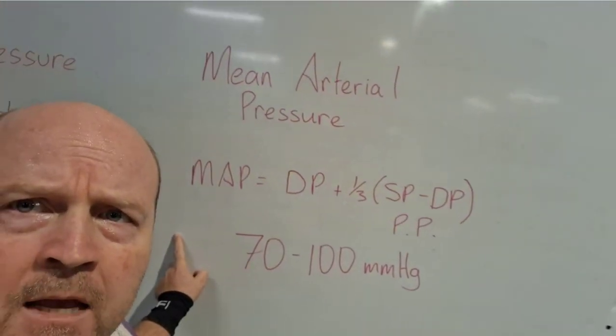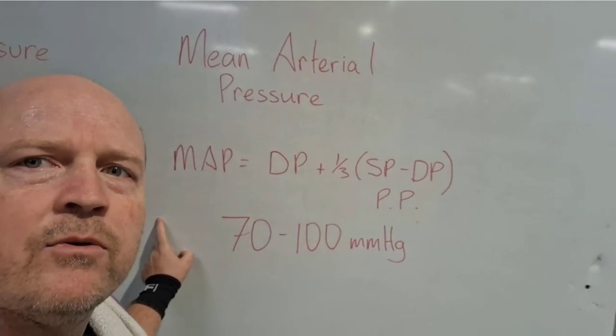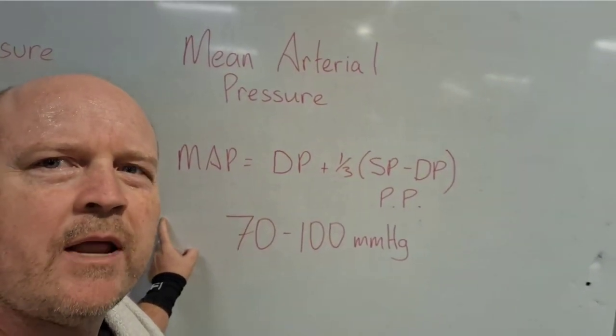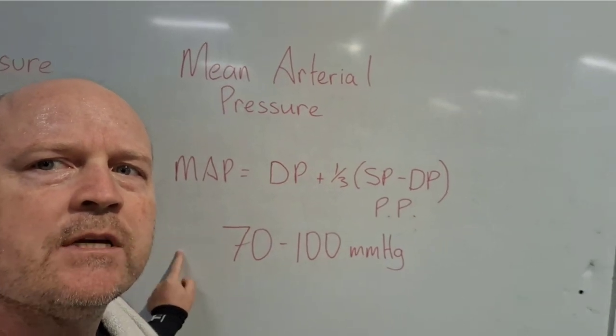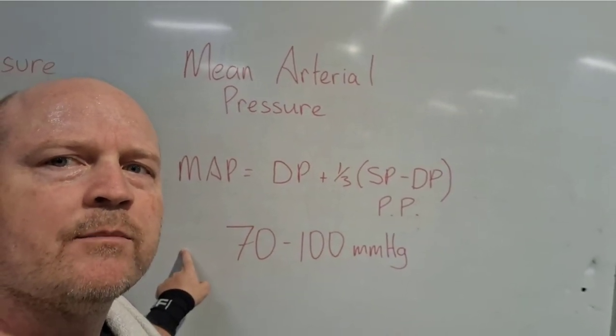Mean arterial pressure does the same thing — it measures the pressure that the blood exerts on the wall of the arteries — but because it's mean arterial pressure, it's the average pressure. That systolic wave is spending less time than the diastolic portion, so mean arterial pressure takes into account the fact that more time is spent in diastole than systole. Mean arterial pressure is diastolic pressure plus a third of the pulse pressure, and the average is 70 to 100 mmHg.